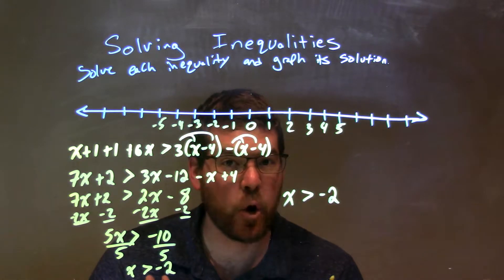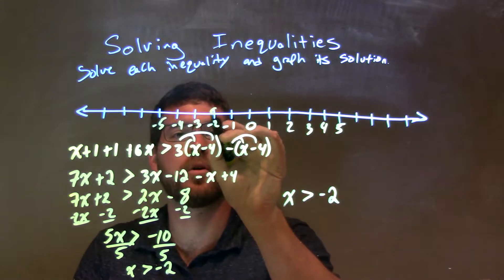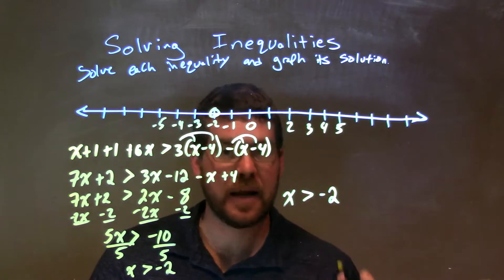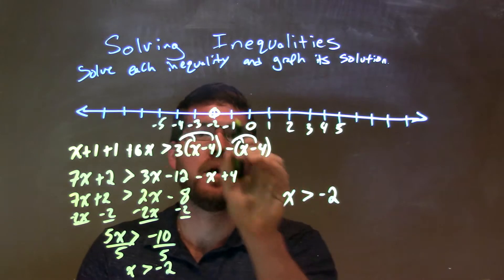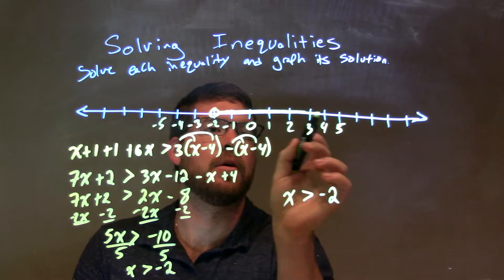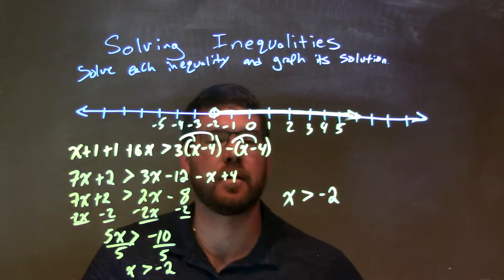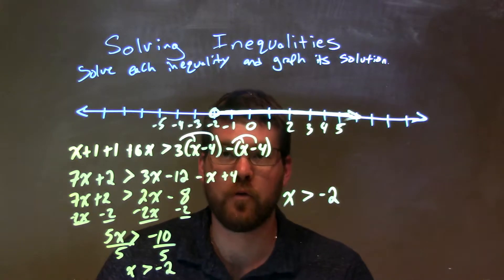And we said x is greater than negative 2. So, we have an open circle at negative 2, because it's not equal to negative 2, just greater than that, and we shade to the right. And there we have it. We have a final answer.